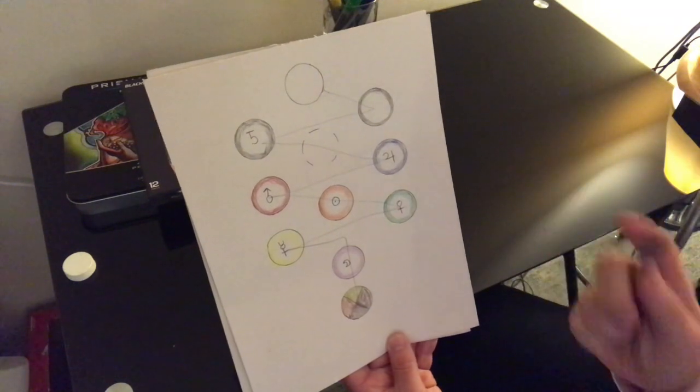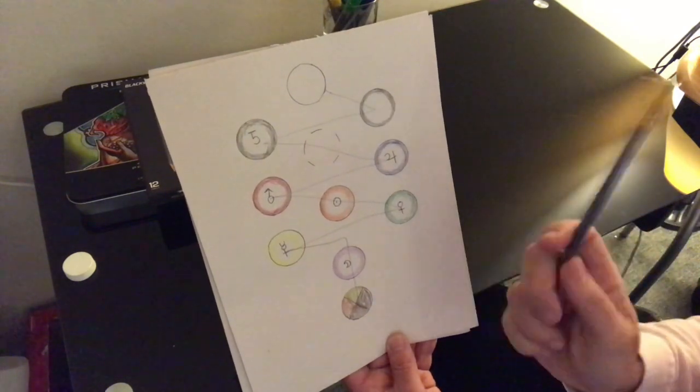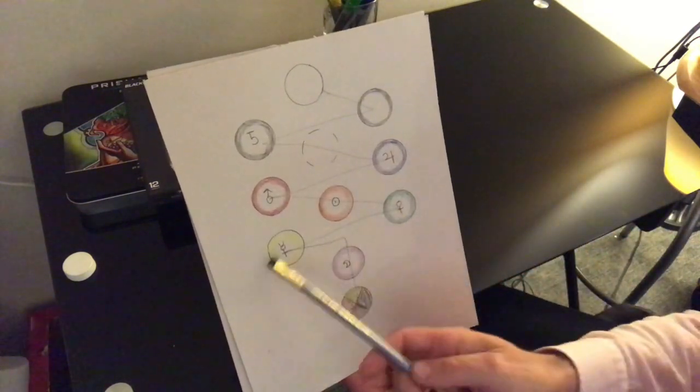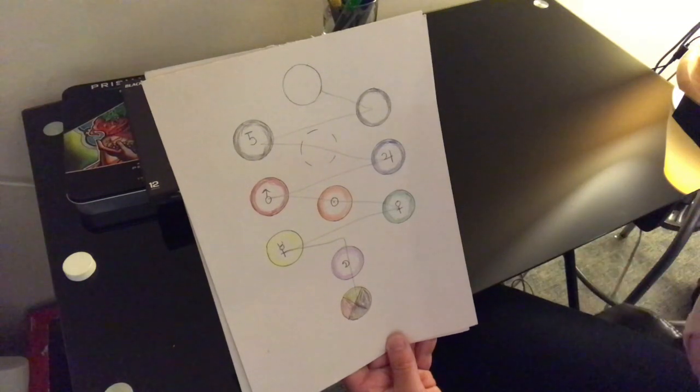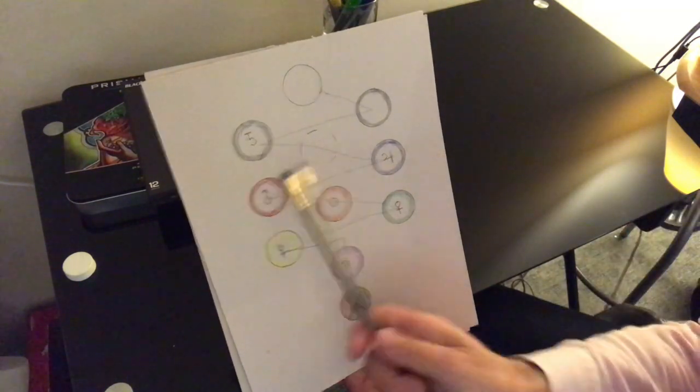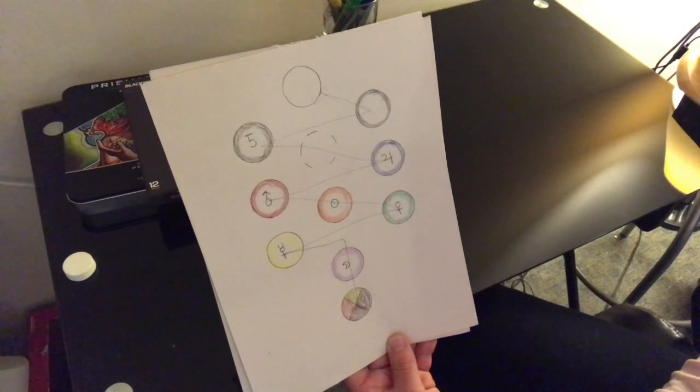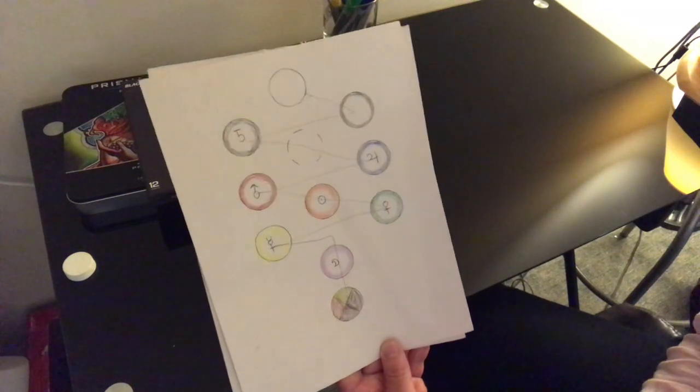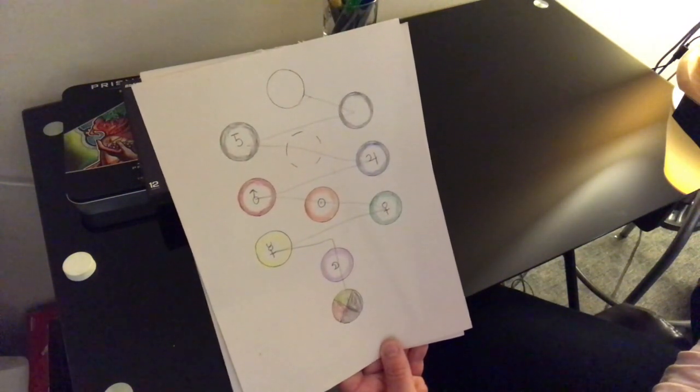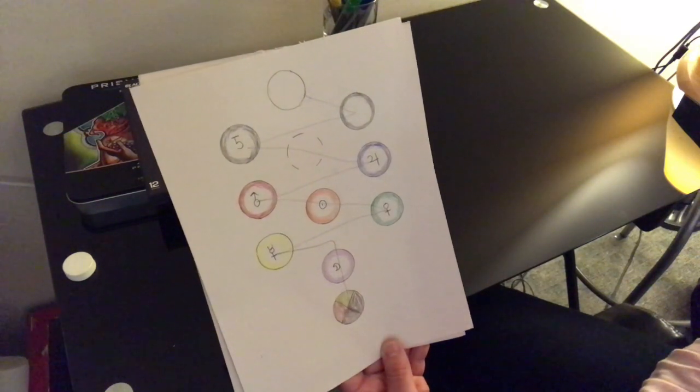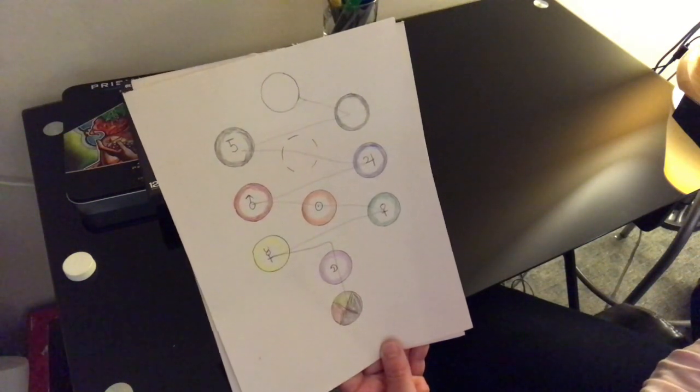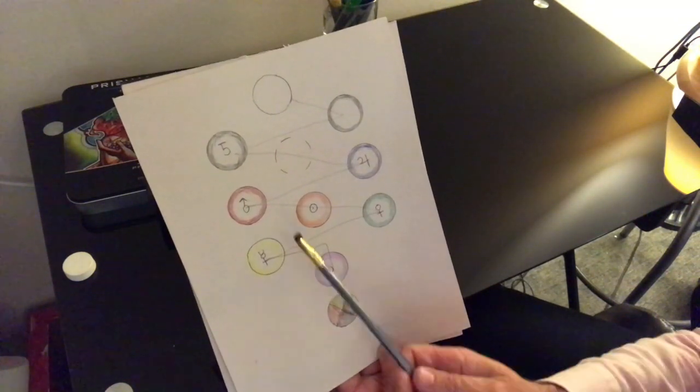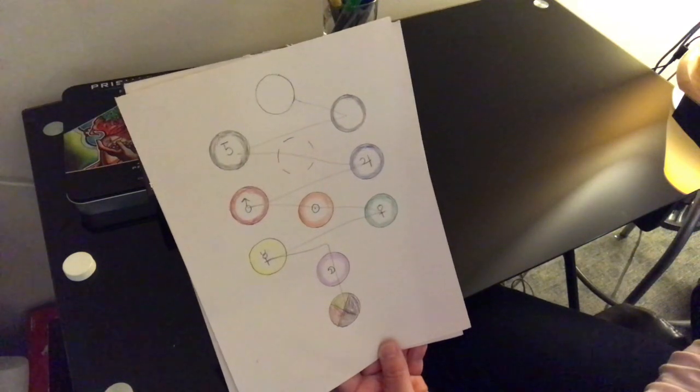But for the rest of you who don't have Aquarius Moon, whatever your Moon sign is, that's the angel that is your primary birth angel. So if you have Aries Moon, then Samael is your primary birth angel. If you have Taurus Moon, Anael is your primary birth angel. If you have Gemini Moon, then Raphael is your primary birth angel. If you have Cancer Moon, Gabriel is your primary birth angel. If you have Leo Moon, Mikael is your guy, your primary birth angel.